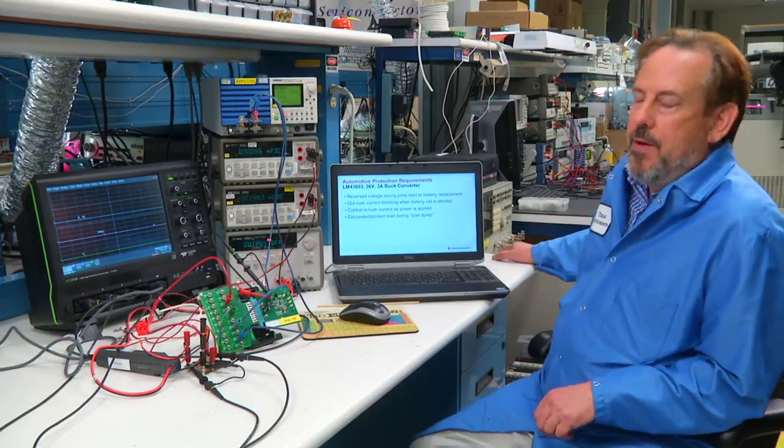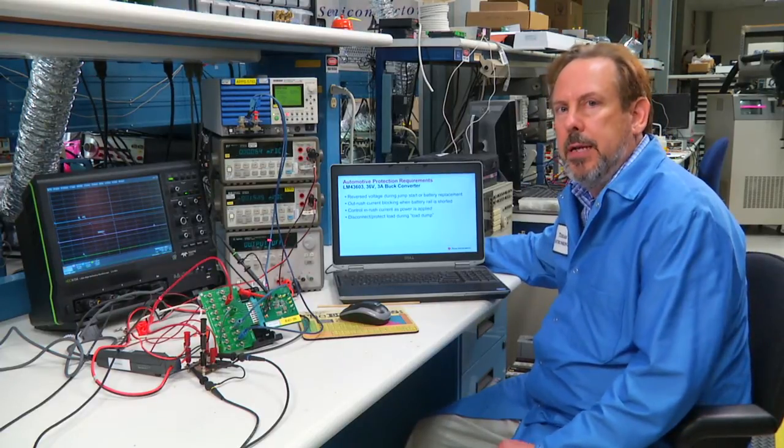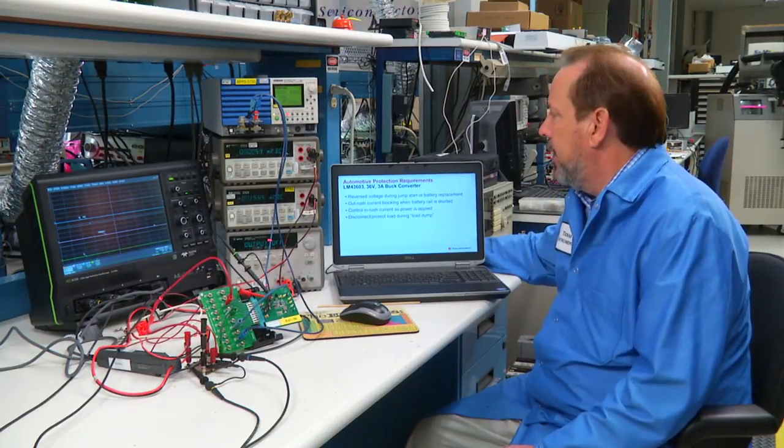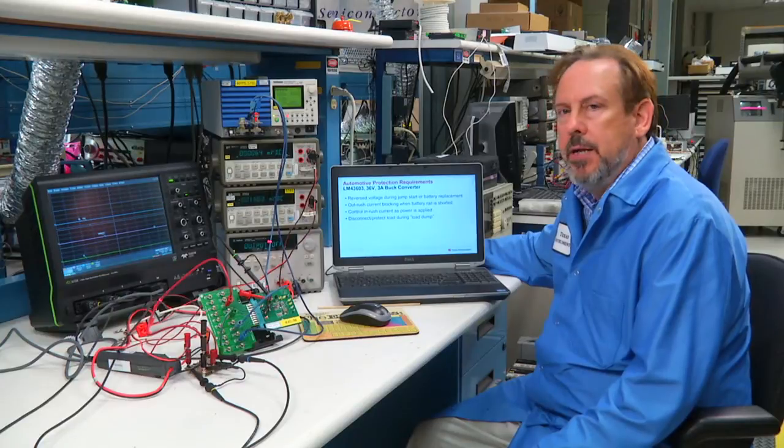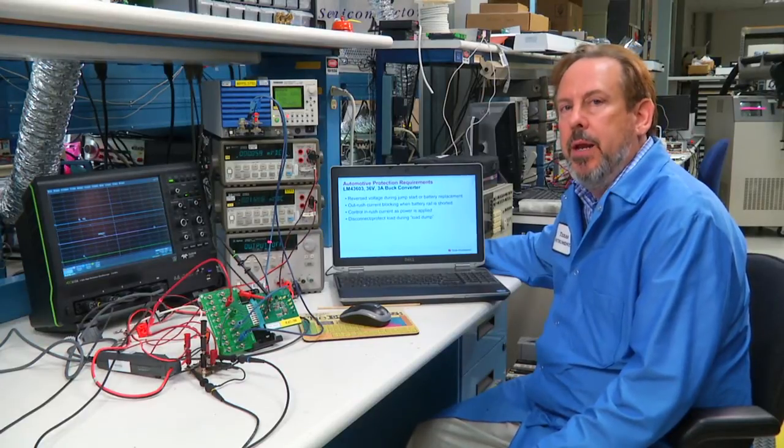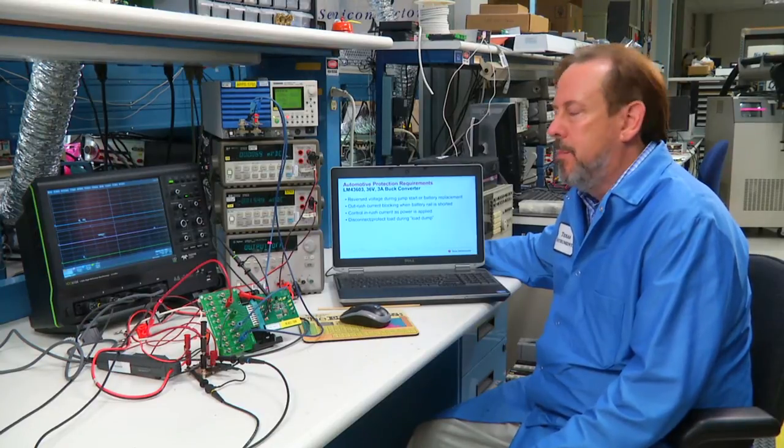In an automotive application, there are many dangerous events that can occur for an electronic device tied to the battery bus. In particular, during replacement of the vehicle battery, the installer may inadvertently reverse the terminals of the battery, and that can lead to a negative voltage being applied to the battery bus, damaging electronic devices. So any new device that you attach to the bus has to be capable of sustaining that kind of punishment.